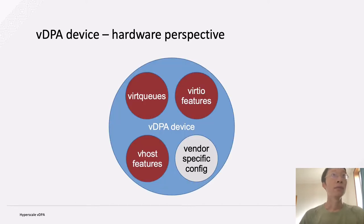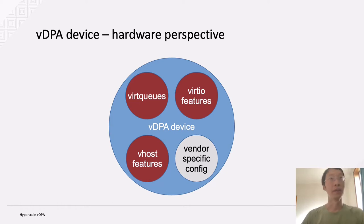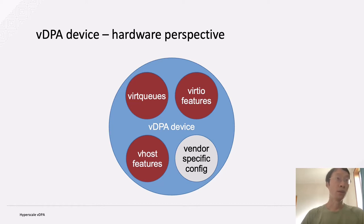From the hardware perspective, the VDPA device contains the following parts. First, it should contain all the virtio features and virtual queues, and then it may contain the vhost features. What's more important, all this is done in a vendor-specific config, and it also allows vendors to have some add-on features.